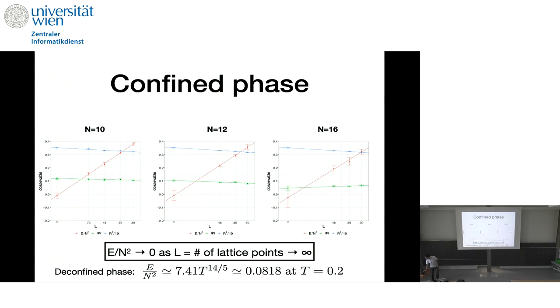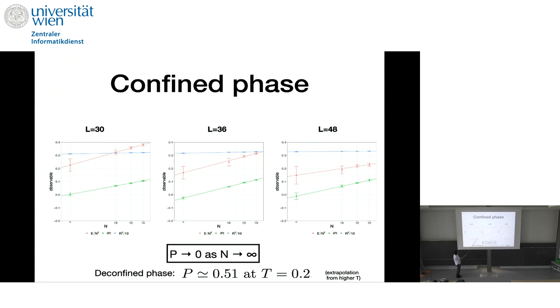If we, at each fixed lattice size, if we take large N limit, N equals to infinity, 10, 12, 16, and infinity, large N limit of Polyakov loop, is equal to zero. And it would mean, in a large N continuum limit, both energy and Polyakov loop are zero.